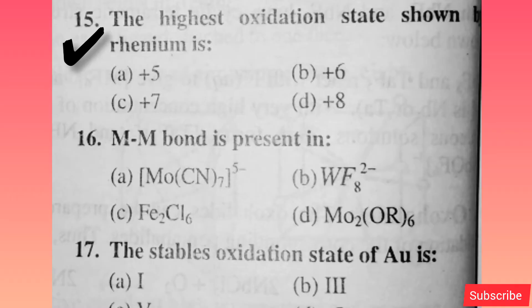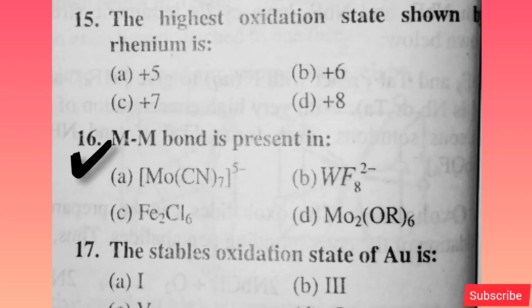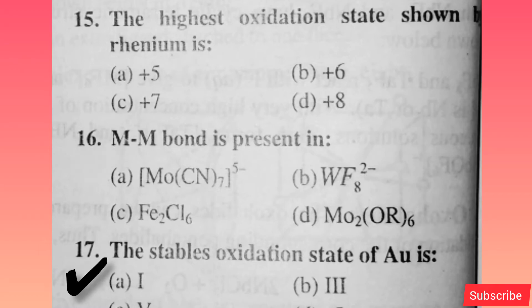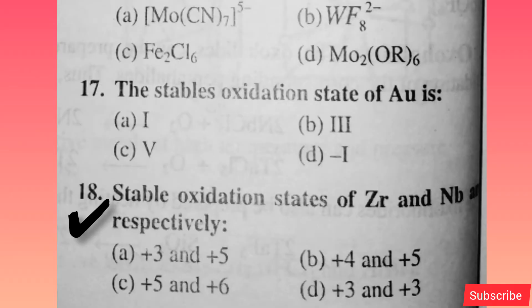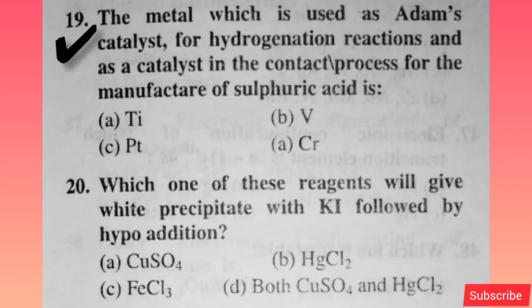The highest oxidation state shown by Rhenium is — option C is correct. M–M bond is present in — option D is correct. The stable state of AU is — option B is right. Stable oxidation states of Zr and Nb respectively — option B is correct. The metal which is used as Adam's catalyst for hydrogenation reaction and as a catalyst in the contact process for the manufacture of sulfuric acid is —